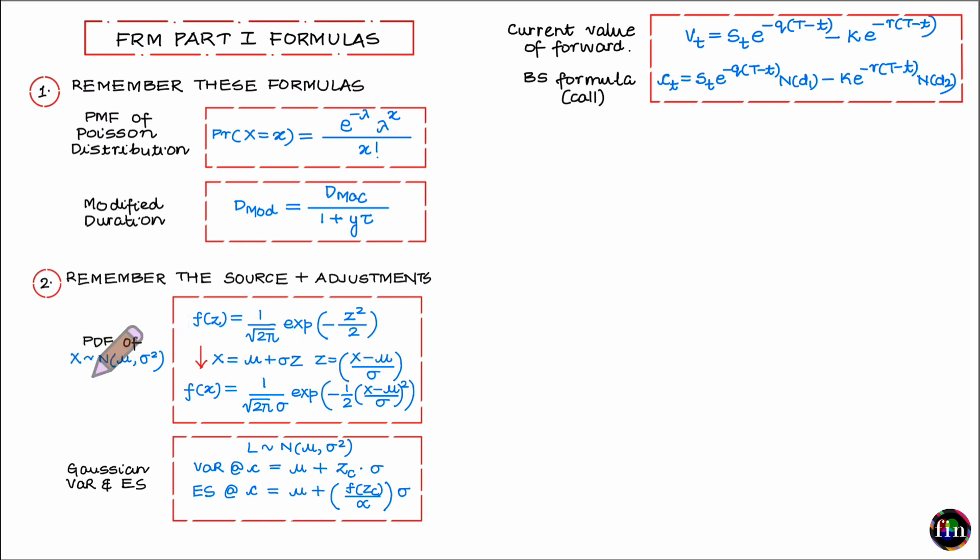So for example if x is normally distributed I can write x in terms of z as x is equal to mu plus sigma times z, which tells me that z is x minus mu over sigma, and I can very quickly start with this formula, replace the z by x minus mu over sigma.